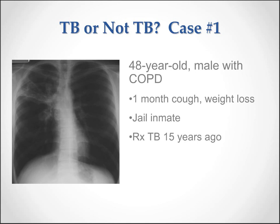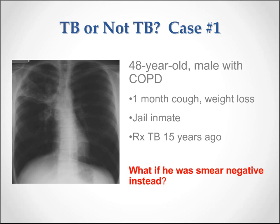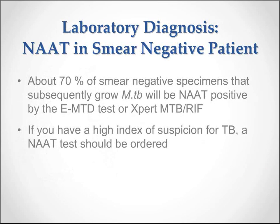Let's go back to the same X-ray and change the scenario a little bit. Again, you see the fibronodular changes in the right upper lobe. Same history — one month cough, weight loss, jail inmate, treated for TB 15 years ago — but let's say he's smear negative instead. About 70% of smear-negative specimens that subsequently grow M. tuberculosis will be NAT positive with either the enhanced MTD test or the Xpert MTB/RIF test. So if you do have a high index of suspicion, and certainly this case would fall into that category, a NAT test should be ordered.